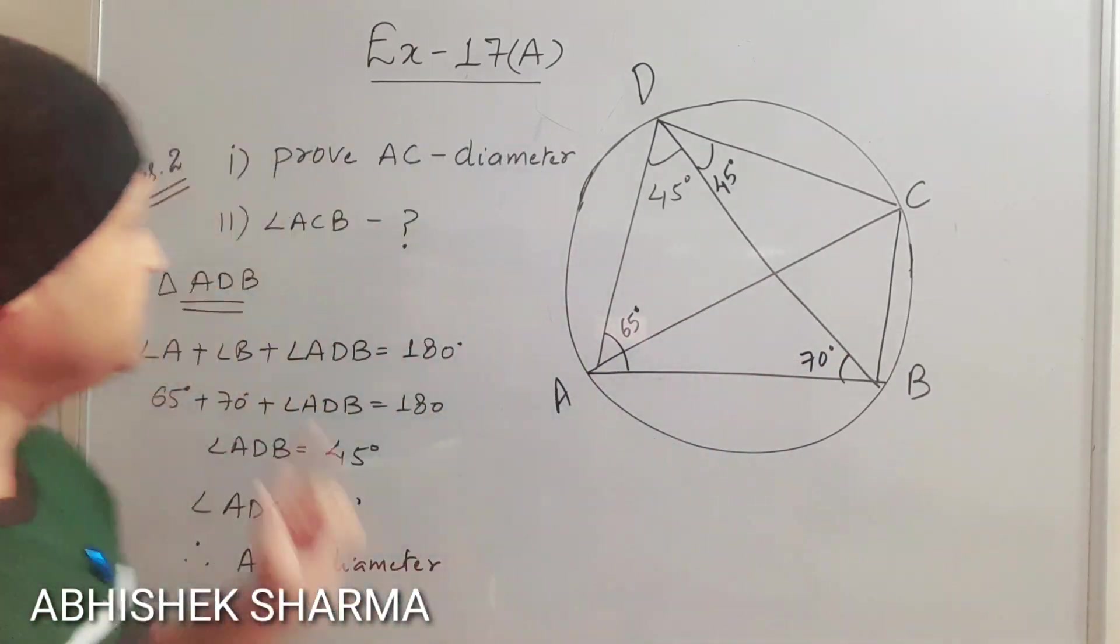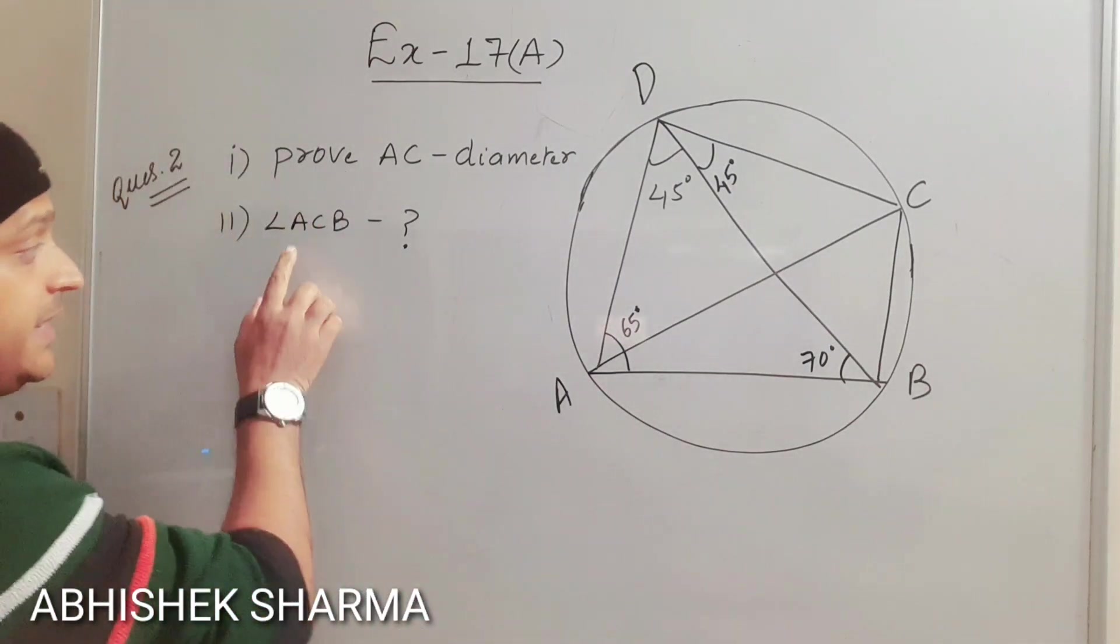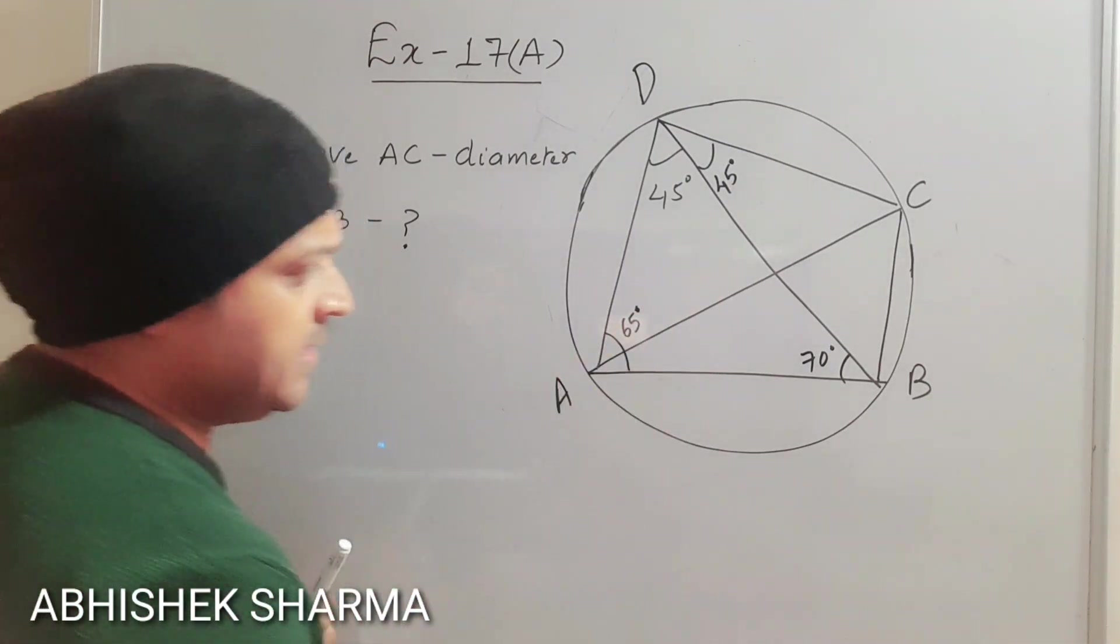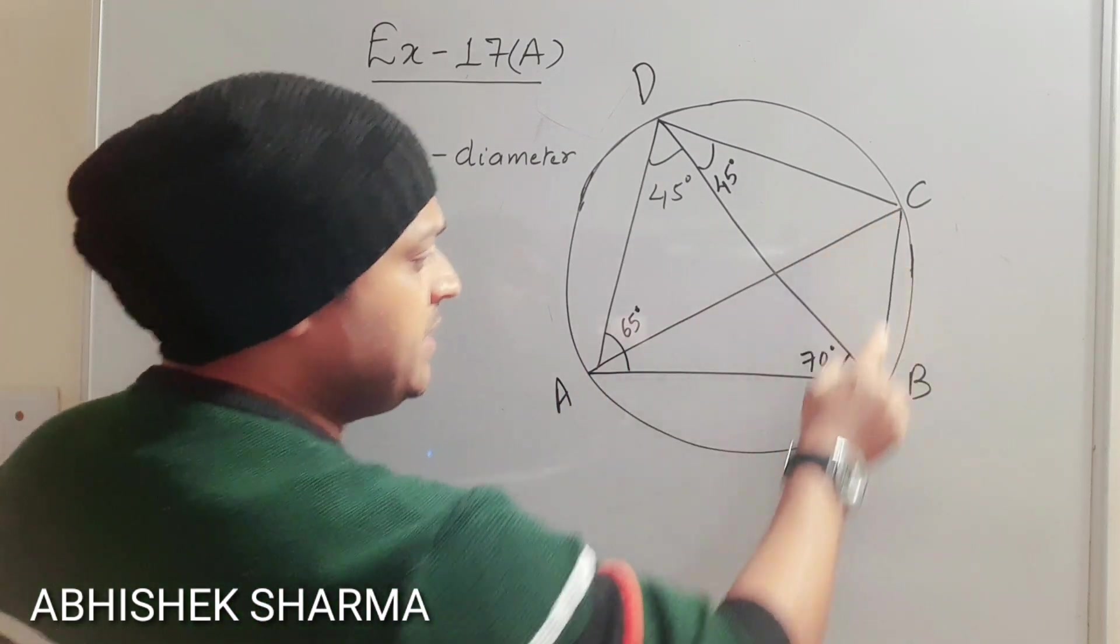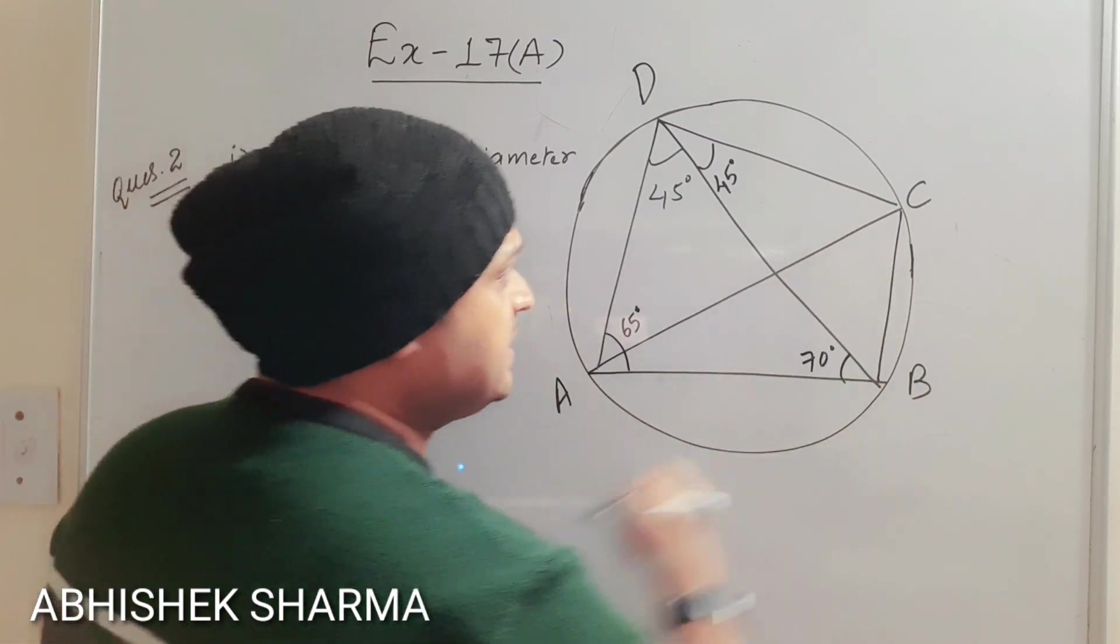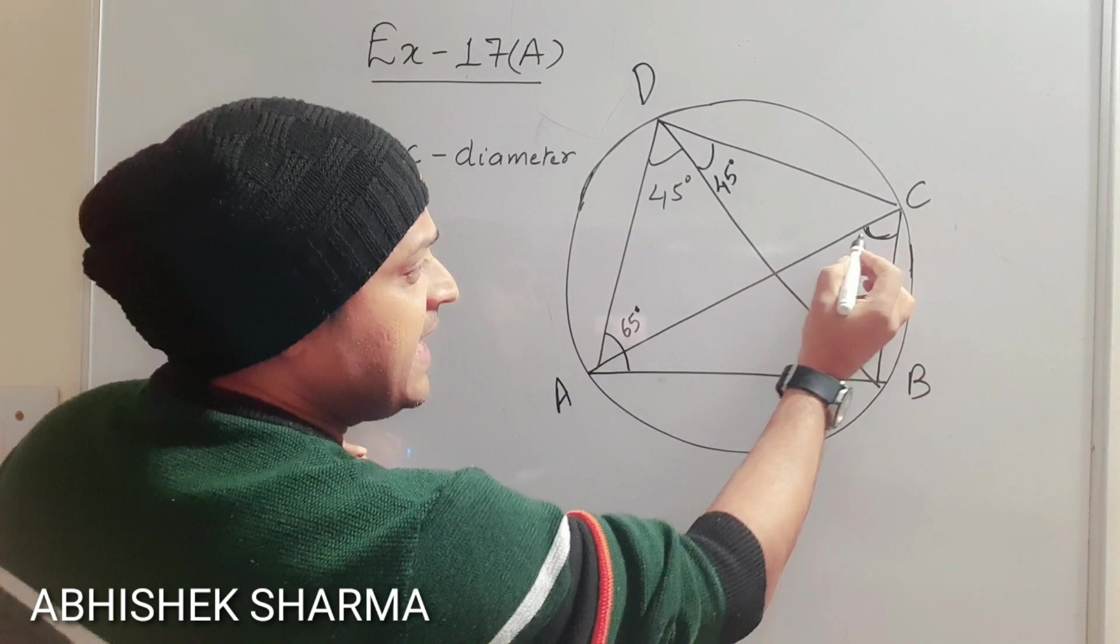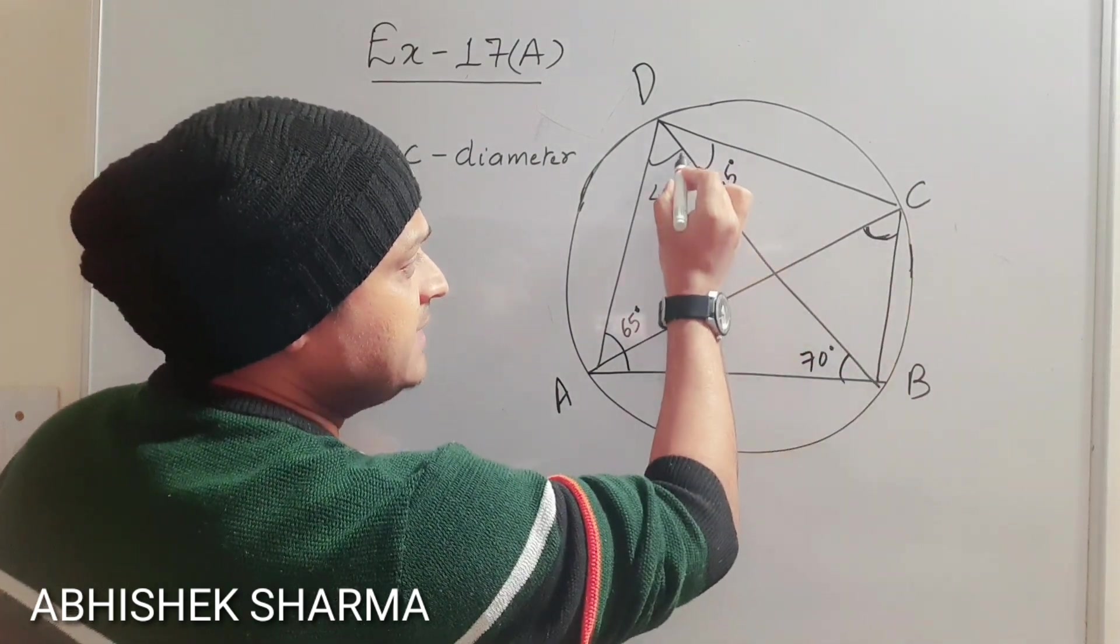Let us continue second part of the second question. If you want to calculate ACB that has become very simple here. ACB. Look at this diagram very carefully. ACB, it means this angle you want to calculate. This angle. So this angle is equal to that angle.